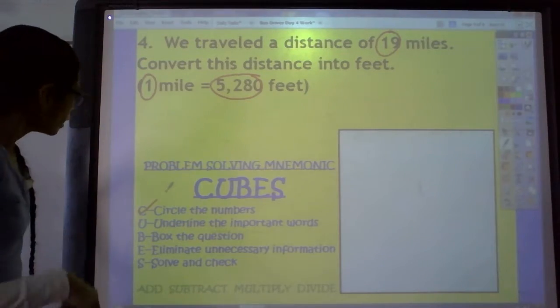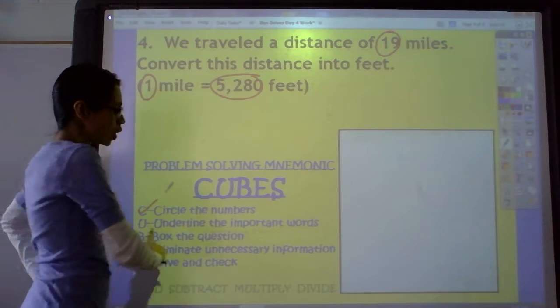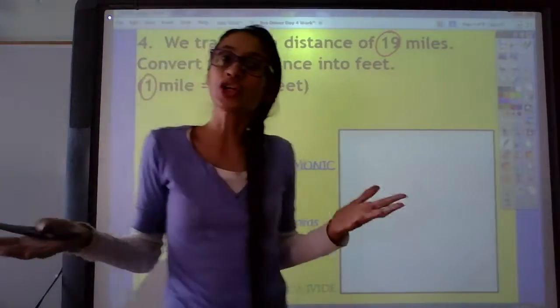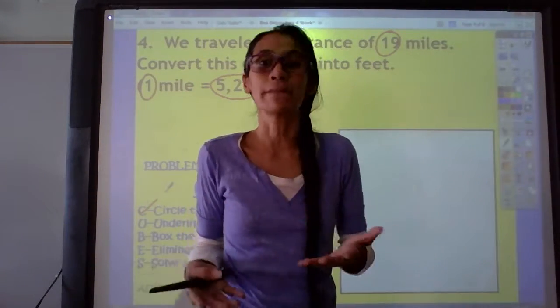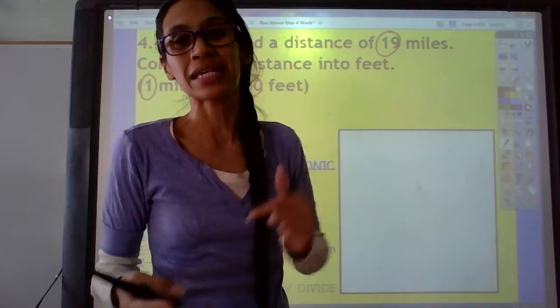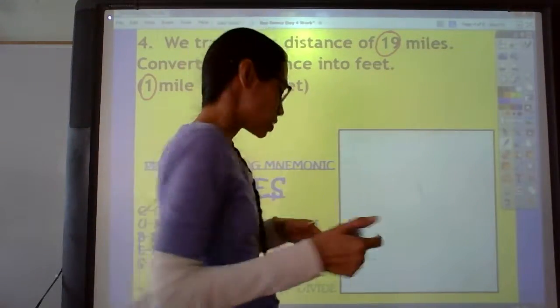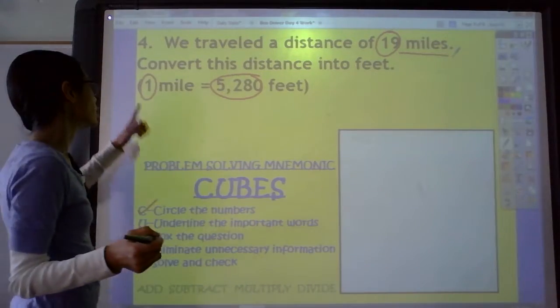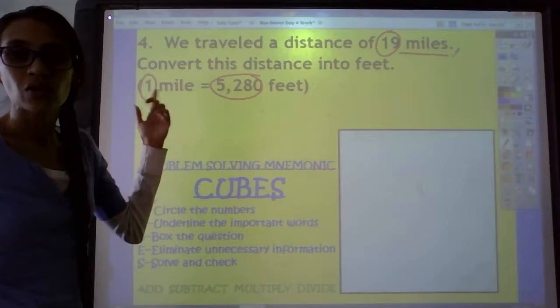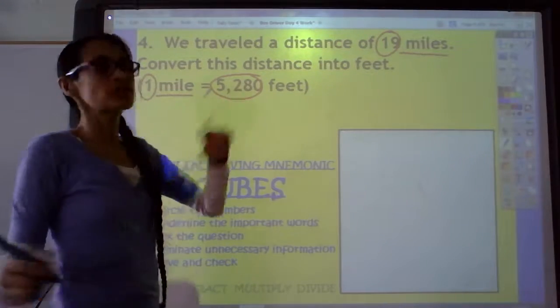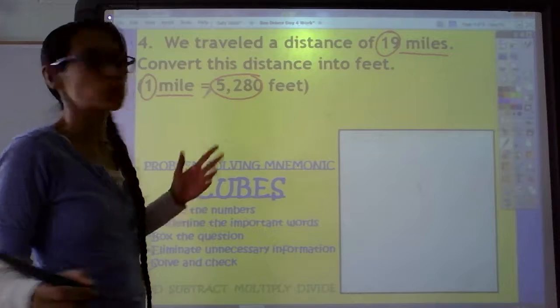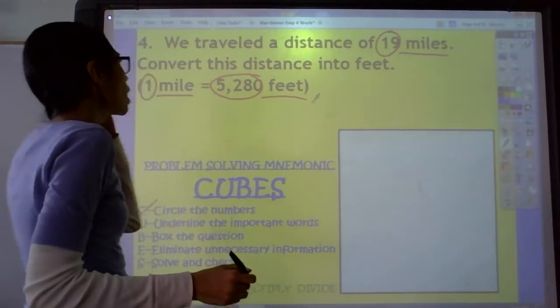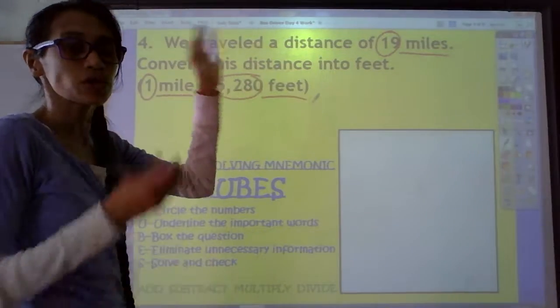The next step in our cubes clues is the U step. It says to underline the important words. So we can start off by underlining the unit that goes with each number. So look at that number 19. 19 what? Miles. Underline that. And look at the number one right here. One what? One mile. Look at this next number, 5,280. What? Feet. Underline that. So we are done with those key words, those important words.